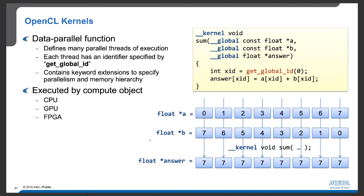OpenCL kernels are data-parallel functions. We use OpenCL kernels to define many parallel threads of execution. Each thread, or kernel instance, relies on identifiers specified by GetGlobalID or sometimes GetLocalID. These IDs help identify the segments or partitions of data that a particular kernel is supposed to work on. OpenCL kernel functions also contain keyword extensions to specify parallelism and memory hierarchy — for example, __global is a keyword specifying that a variable resides in global memory.